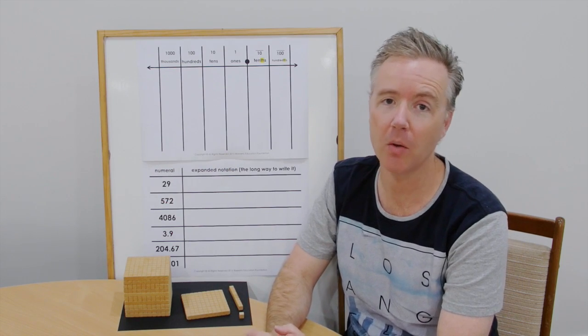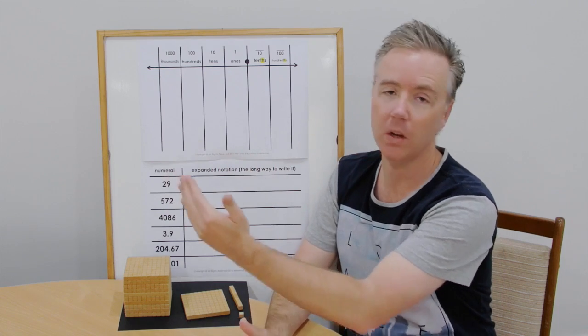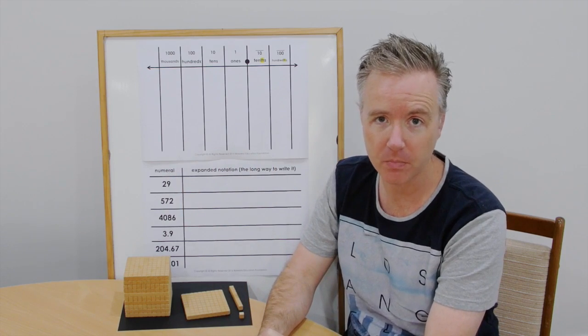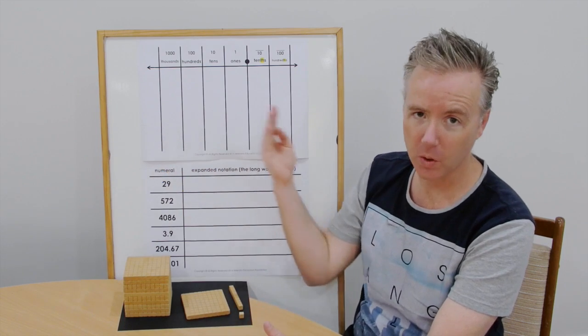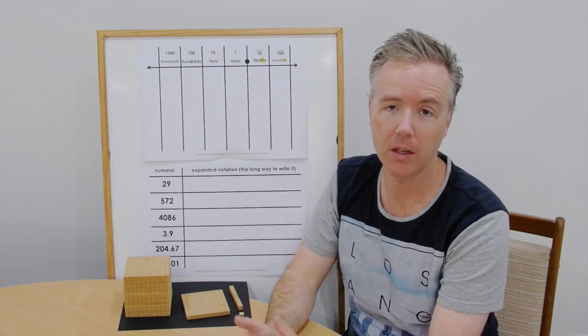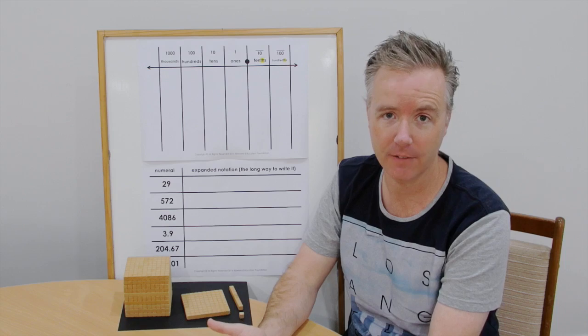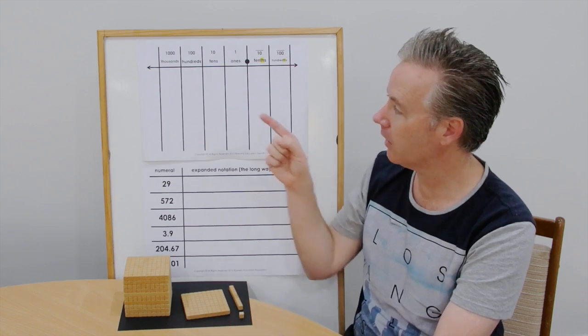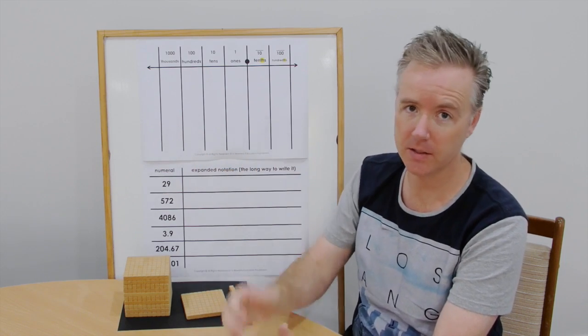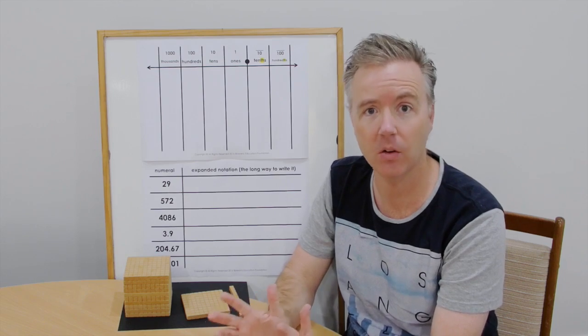You'll notice that each time we go across we increase by a factor of ten. Whenever we come this way across the column we decrease by a factor of ten. Times ten, divided by ten. These two columns here, these are our fractions or our decimals or our part numbers, less than one.